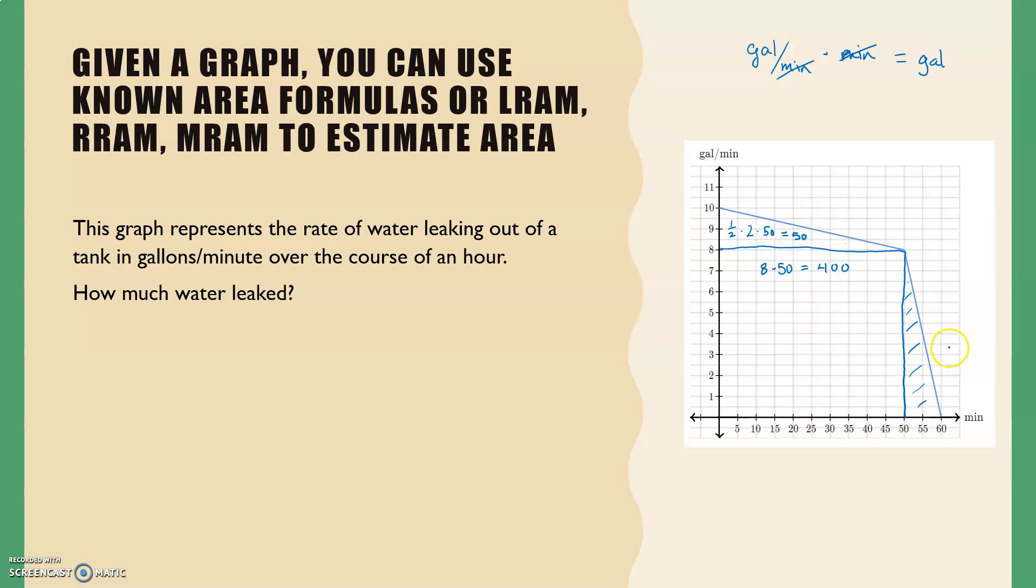And another right triangle, which is 10 times 8, and it's a triangle so one half, 10 times 8 would be 40. And so the amount of water that leaked would be 490 gallons. So you graph a rate and you find the area between that rate and the t-axis; that gives you the amount.